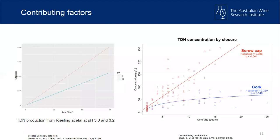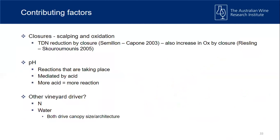pH is definitely a driving force. Work from the AWRI in the late 2000s took a TDN formation pathway compound and stored it at two different pHs — pH 3 (red line) and pH 2 (blue line). They got much quicker formation of TDN from the precursor at lower pH. We see this regularly: the more acid, the lower the pH, the quicker these formation pathways happen. Closure is probably a very big factor — the TDN-with-age graph separated by closure shows screw cap (red) continuing to accumulate TDN, while cork (blue) plateaus.